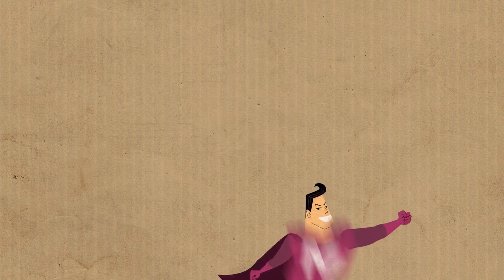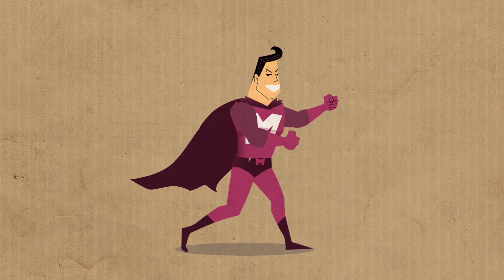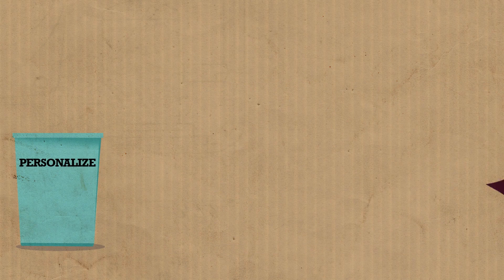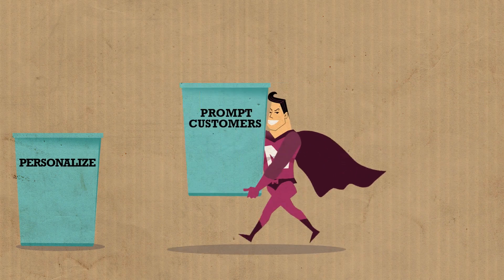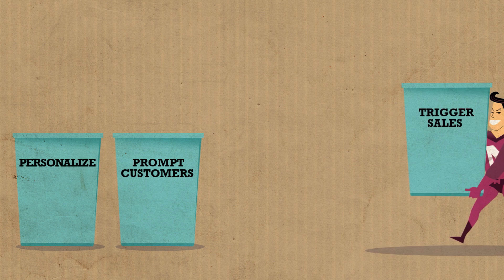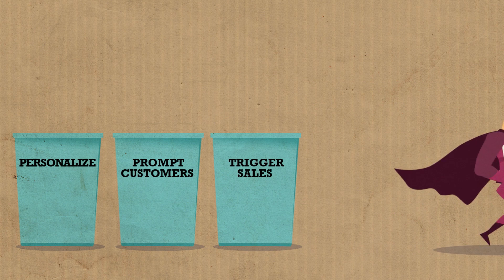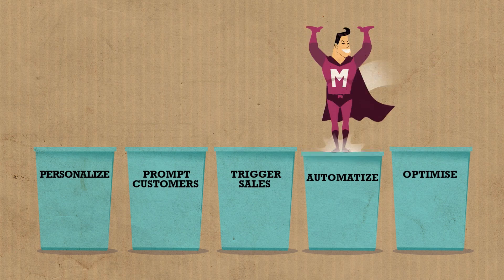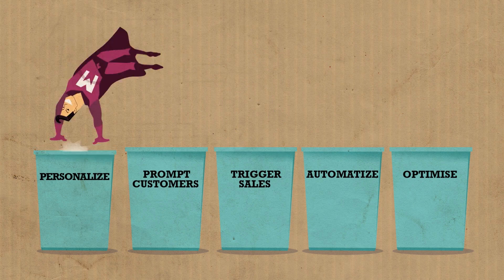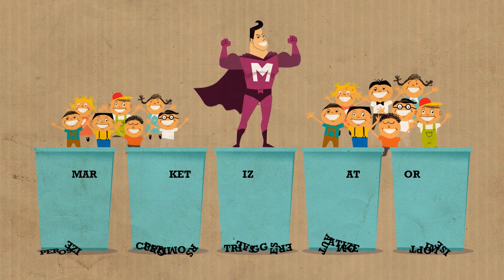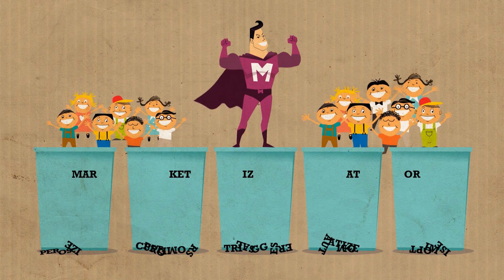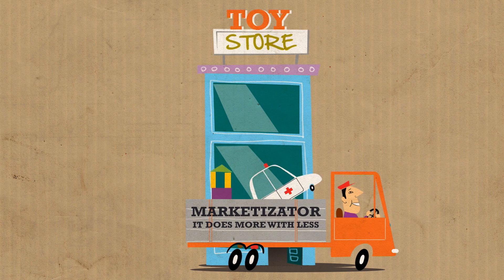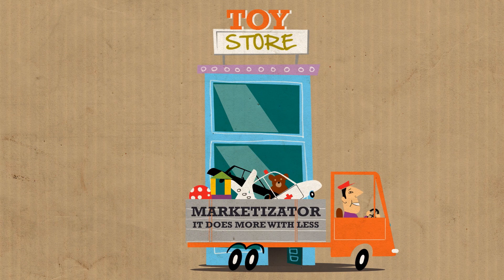Look at marketisator.com as your bigger brother out there on the playground, sorting things out. It can personalize your shopping experience, prompt your customers to special offers, and trigger contextual sales — while letting you stay on top of things by automatizing the optimization of your money. It's a bigger brother: it does more with less. Put Marketisator to work and take the rest of the day off.